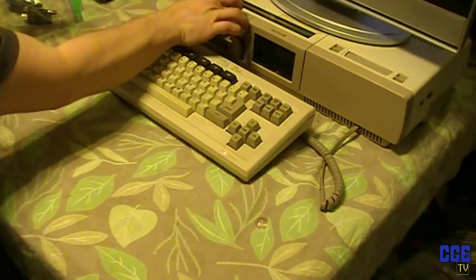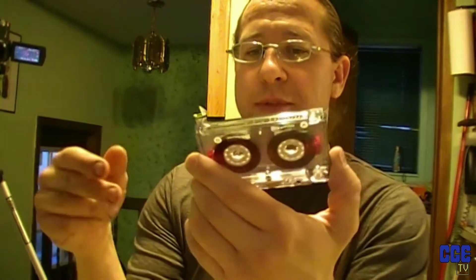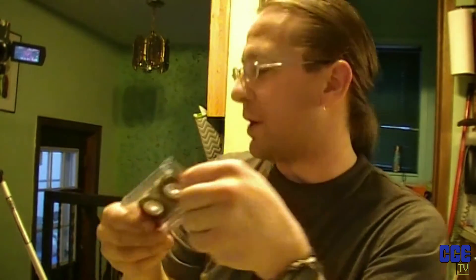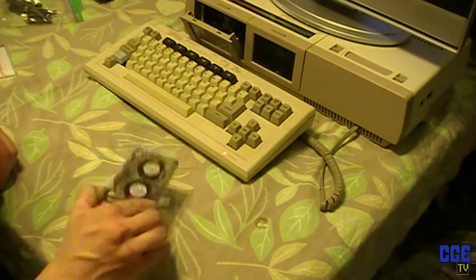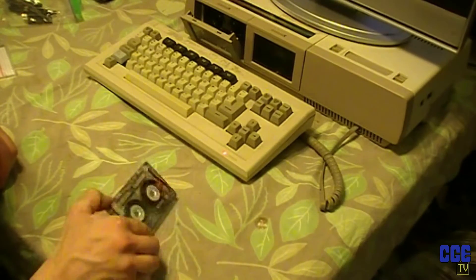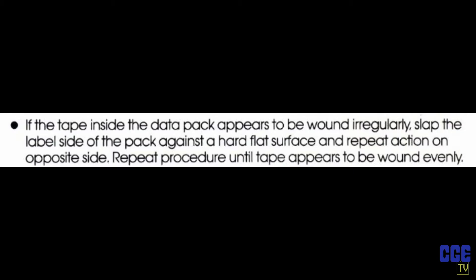One thing you might have to do with your digital data packs: when the tape goes through the cassette player's capstan and pinch roller, it can leave the tape a little uneven. What you do — and it actually says this in one of the Adam manuals — is take the tape and wind it back and forth by hand a couple of times. Then throw it back in and hit reset.